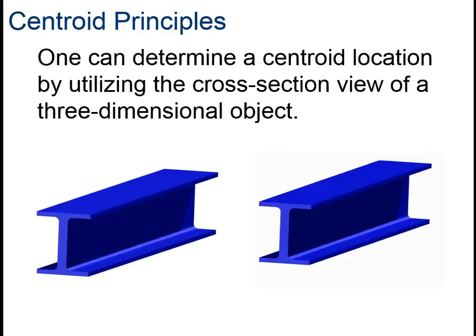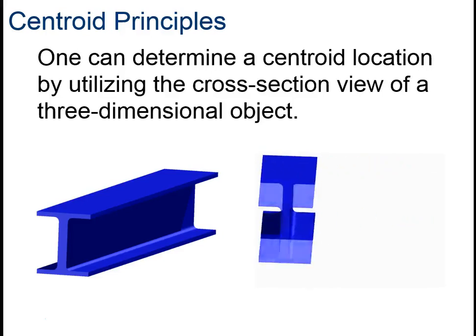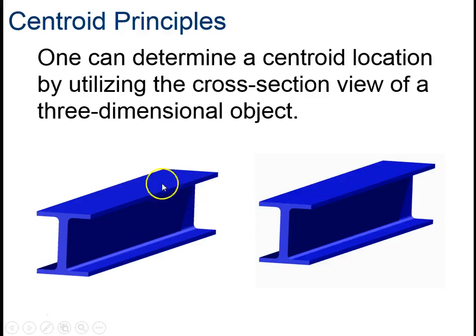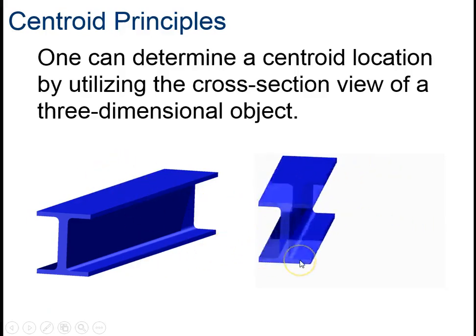We're interested in it because a lot of our building materials use a cross-sectional view. That means if I cut it in half, what would that end look like? For instance, this I-beam here.